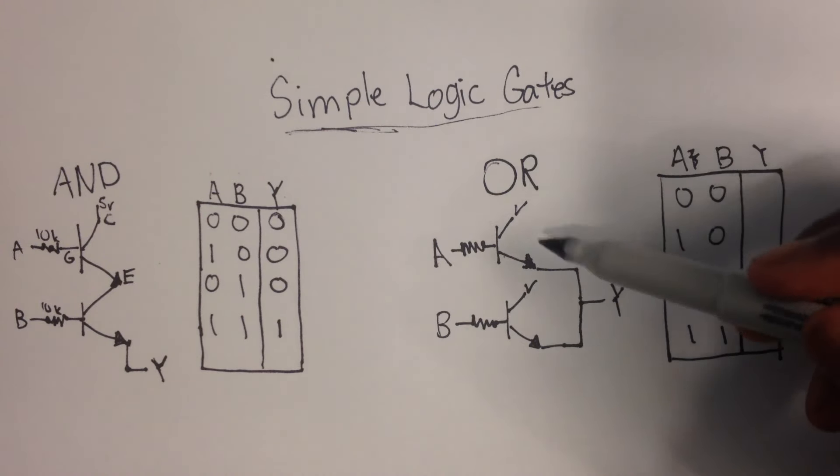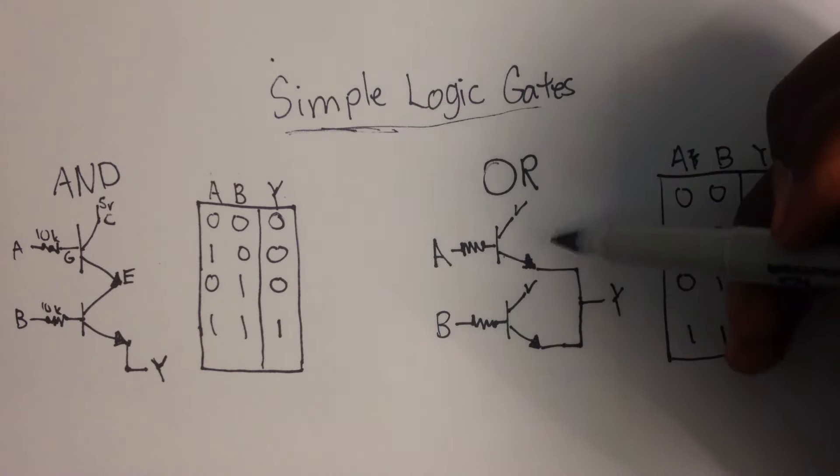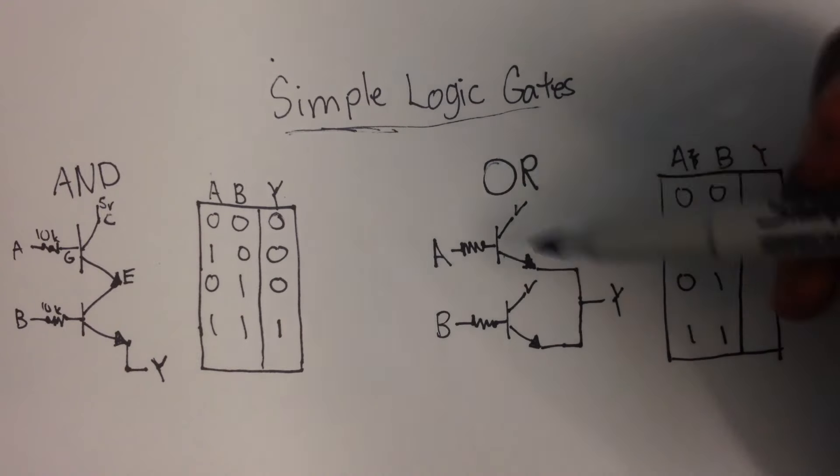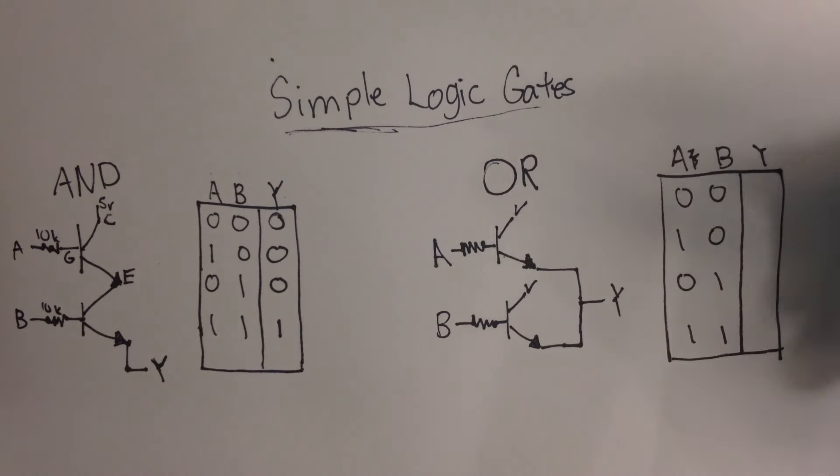Okay, so let's take a look at our OR gate. OR gate, the transistors are put in parallel. So, the same thing as we had over here, except the transistors are now put in parallel.